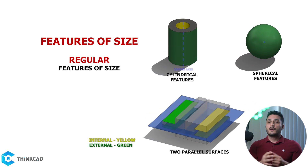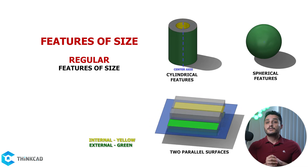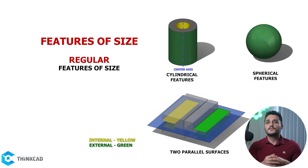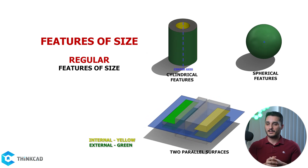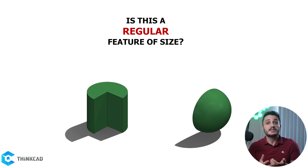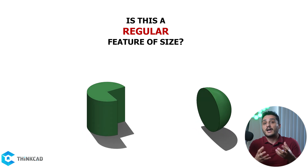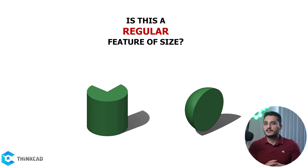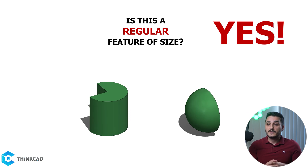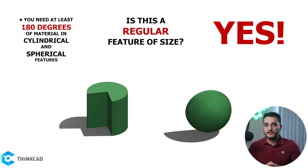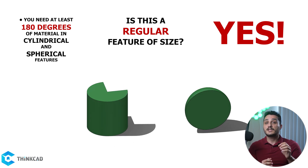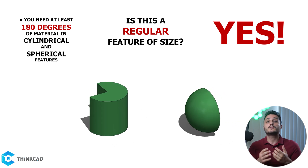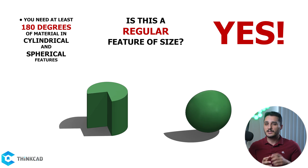Before finishing, there's one more thing to note. The definition for features of size in the GD&T book is not very specific and there are many different interpretations when it comes to special cases. For example, if you have a cylindrical feature that only goes 270 degrees around the axis, or half of a sphere — is that still a regular feature of size? The short answer is yes. As long as you have at least 180 degrees of a cylindrical or spherical feature, you have a regular feature of size. A 179-degree cylinder does not give you opposed points, so keep that in mind.